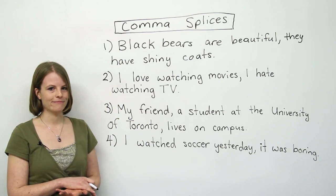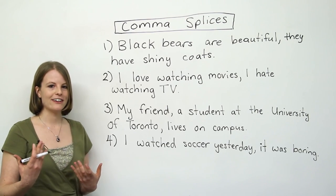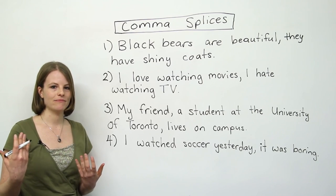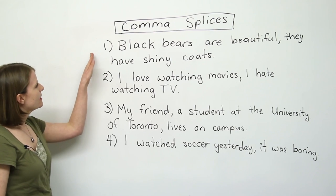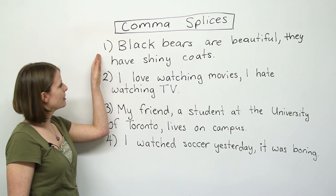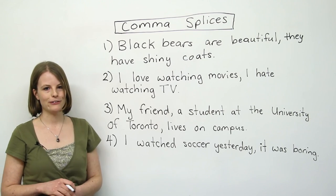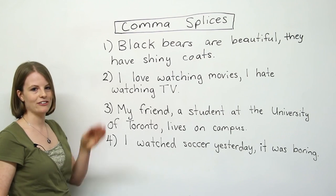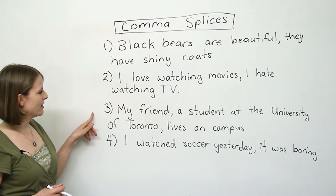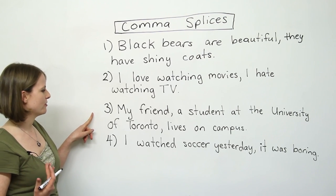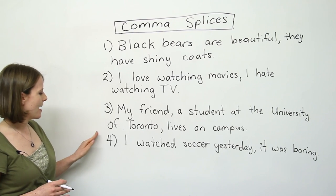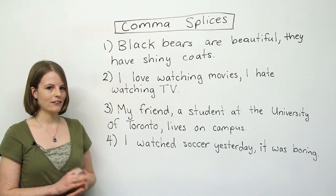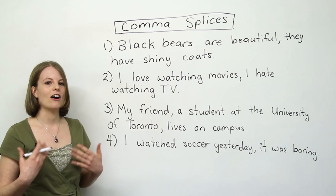I have four sentences up here. I want you to read them — we'll read them together — and I want you to tell me in which sentences do I use a comma correctly, and in which sentences have I made a mistake. Number one: black bears are beautiful, they have shiny coats. Number two: I love watching movies, I hate watching TV. Number three: my friend, a student at the University of Toronto, lives on campus. And number four: I watched soccer yesterday, it was boring. Take a second, look at them, and figure out which ones you think are correct and incorrect.